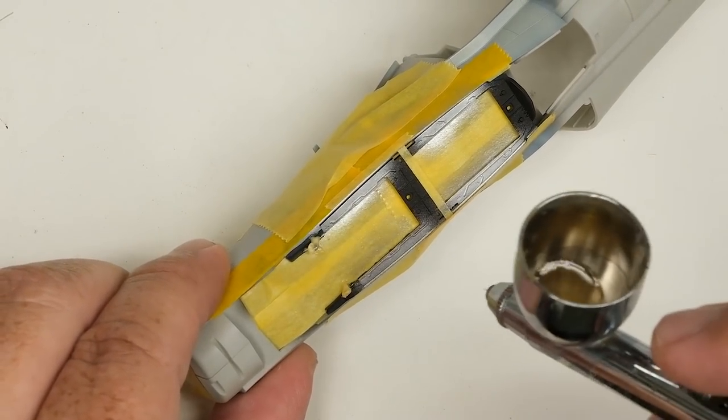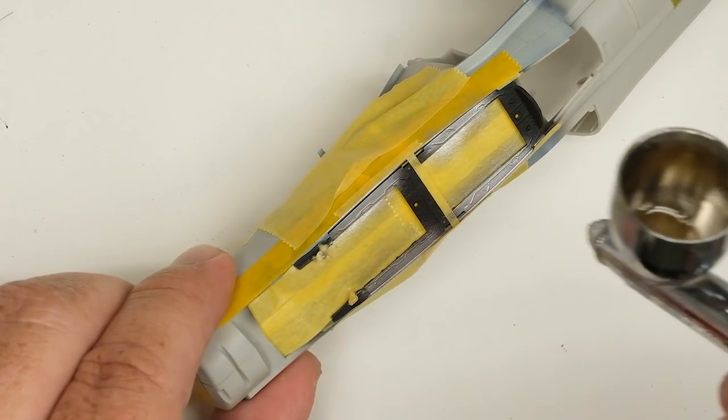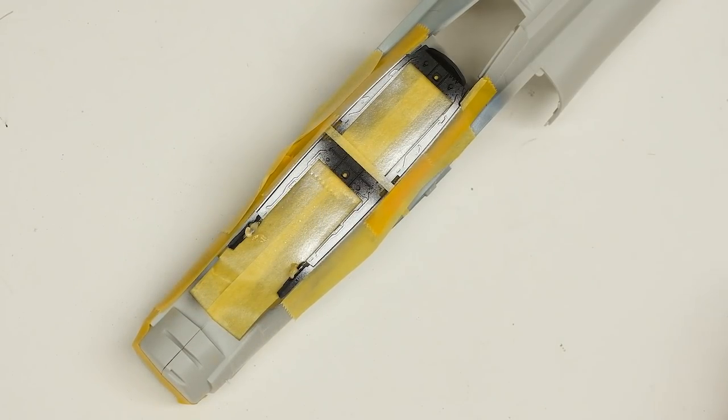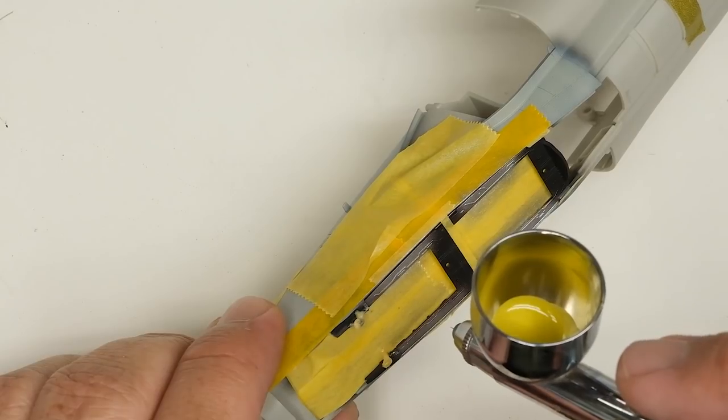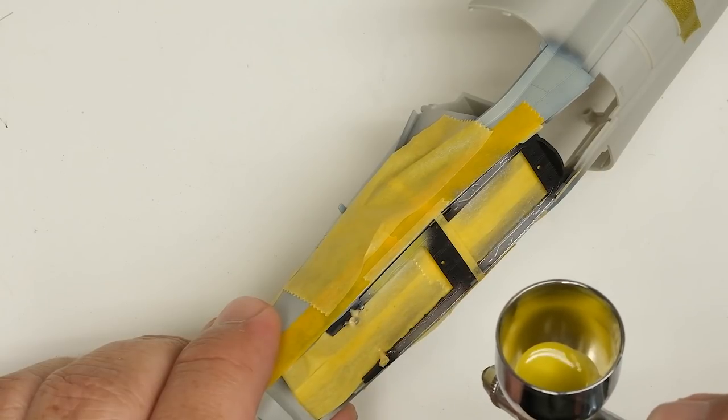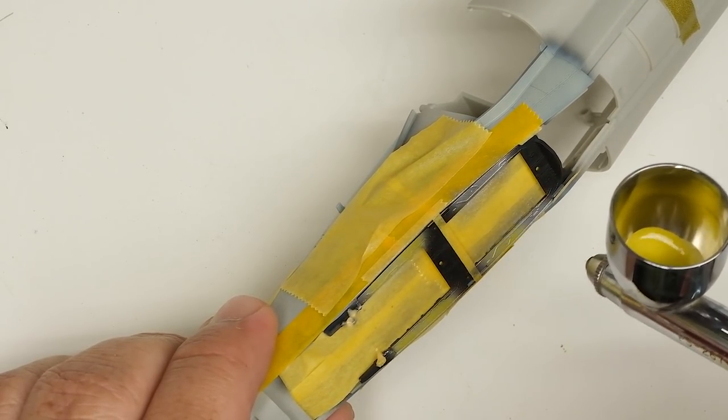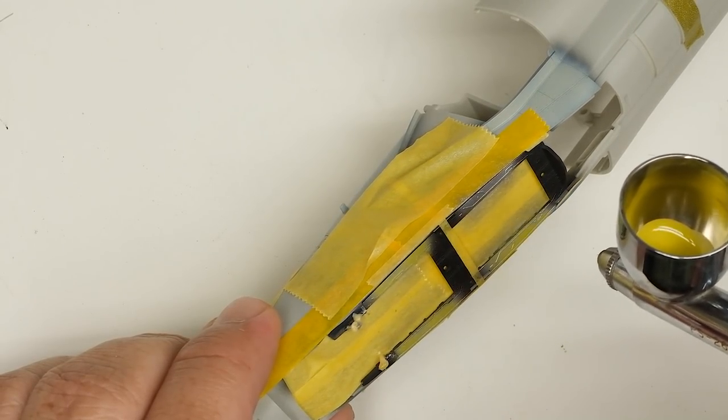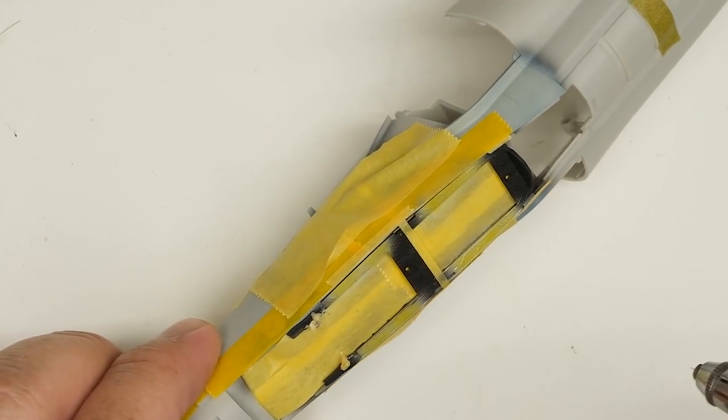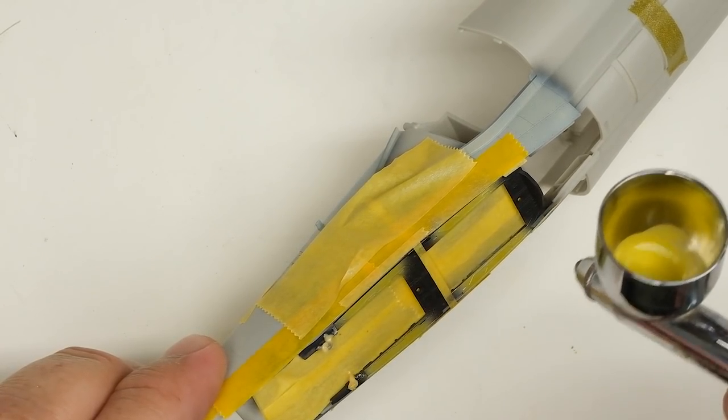Next up, we've got a quick spritz of hairspray. And next up, it's time for a haphazard coat of some Tamiya XF4 yellow green, which is a great stand in for zinc chromate. Now I'm going to step the MAC valve way down, just do a little bit of stippling here.